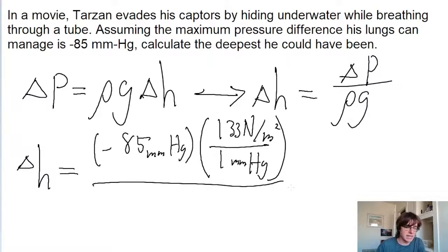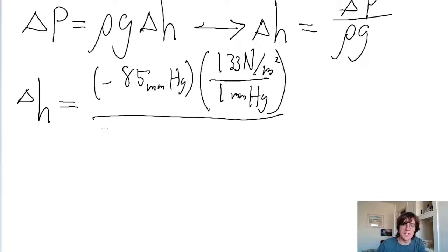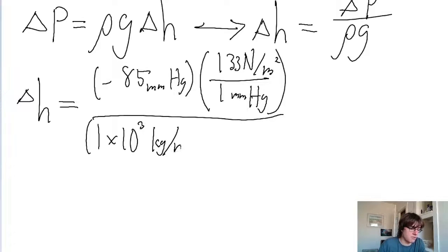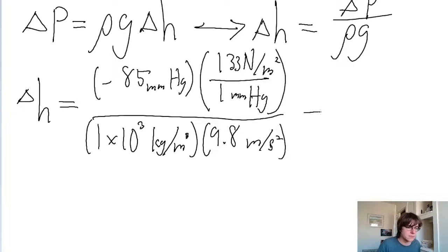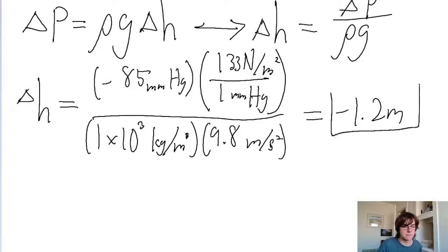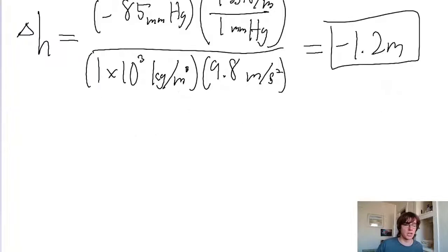This is being divided by the density of water, which is about 1 times 10 to the power of 3 kilograms per cubic meter, multiplied by the gravitational acceleration, which is 9.8 meters per second squared. Putting this into your calculator, we get a height difference of about negative 1.2 meters. So he could be 1.2 meters underwater before it would start damaging his lungs.